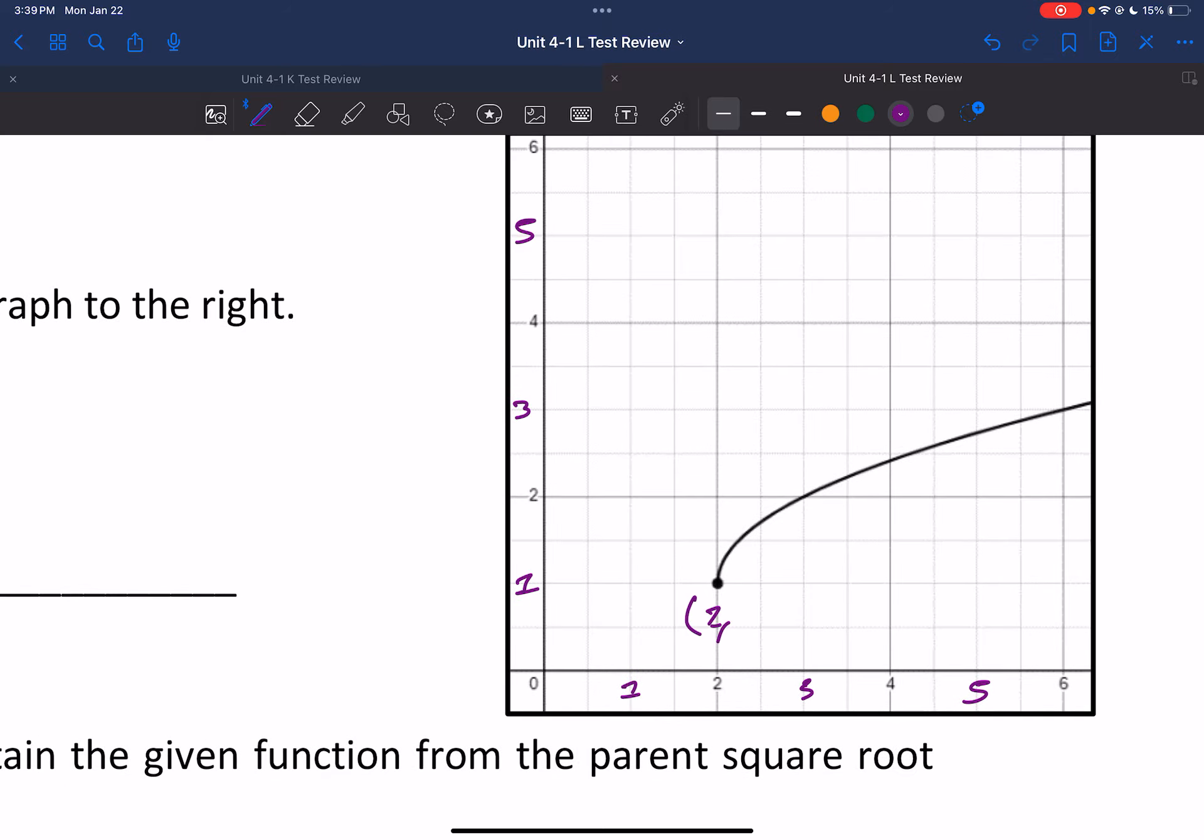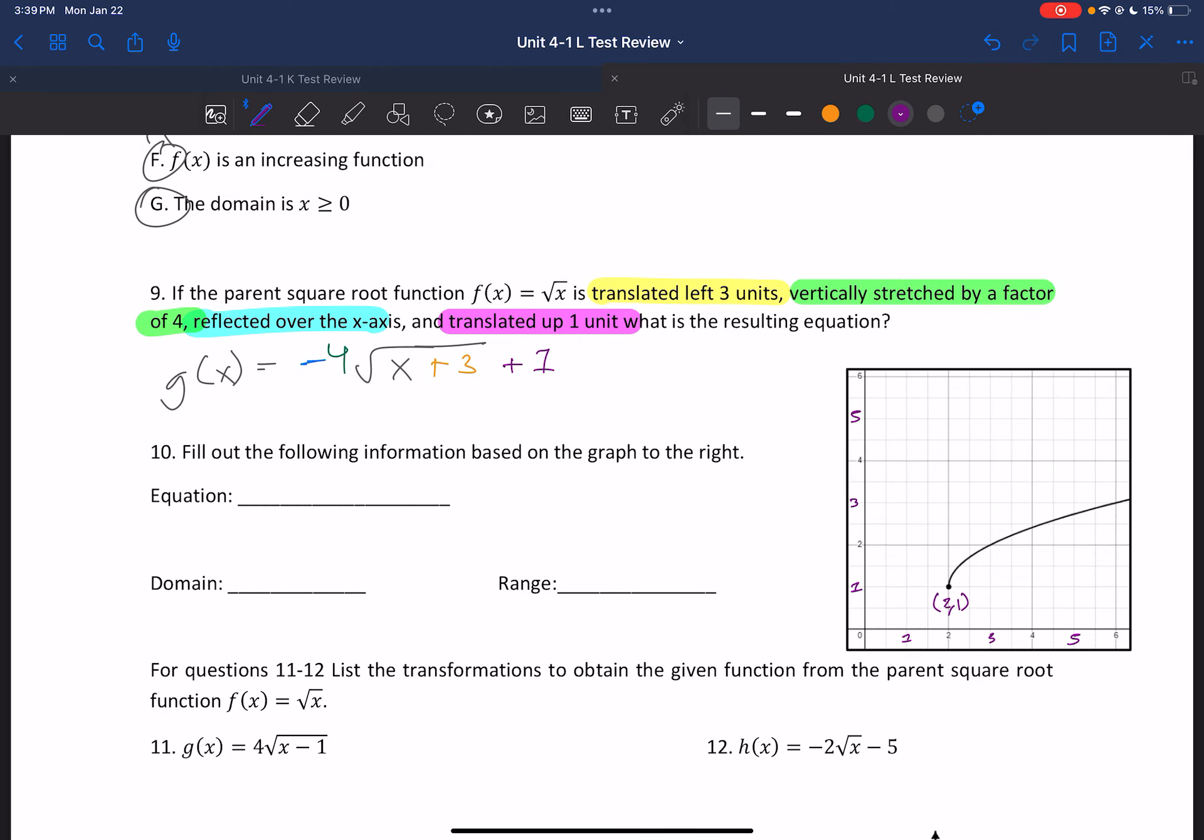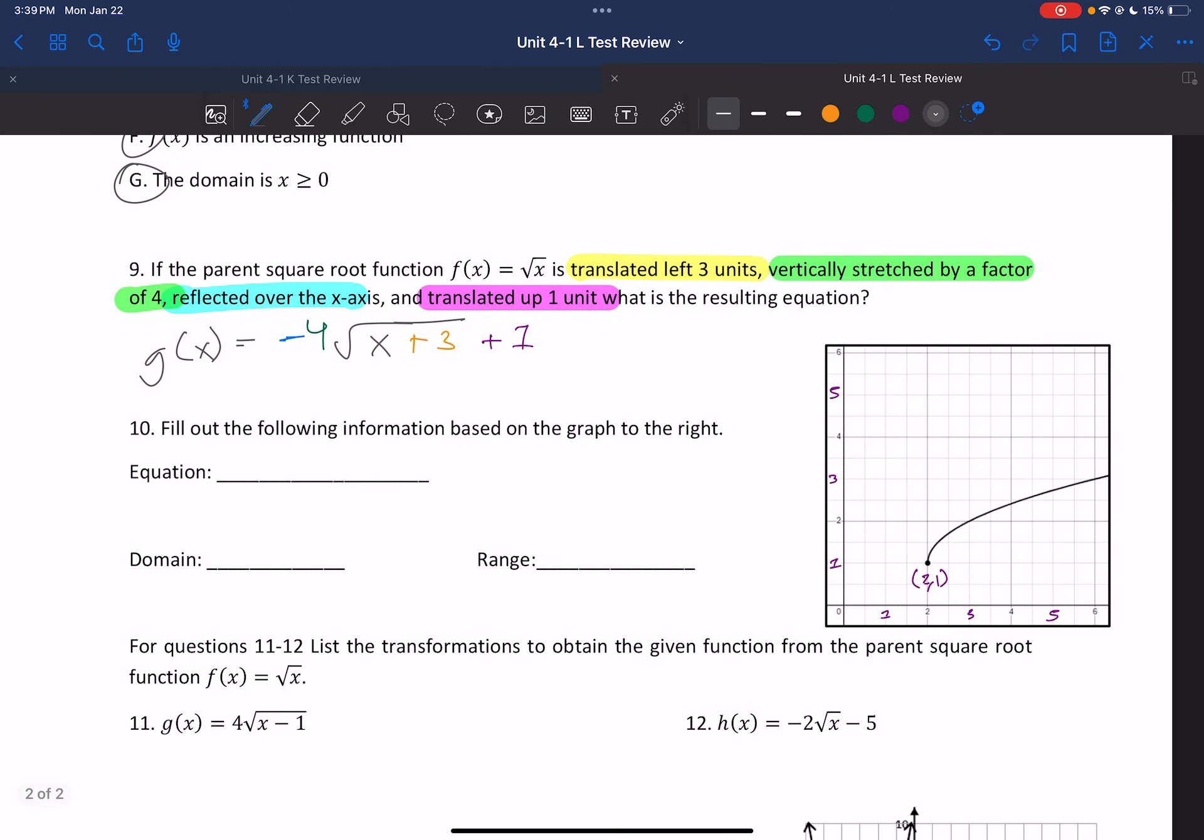So it looks like this point starts at 2, 1. So our equation, because we start with square root of x, it went 2 to the right and 1 up. So minus 2 plus 1. So our domain starts at 2. Our range starts at 1. We're going to the right, so positive infinity for our domain. We're going up, so positive infinity for our range.